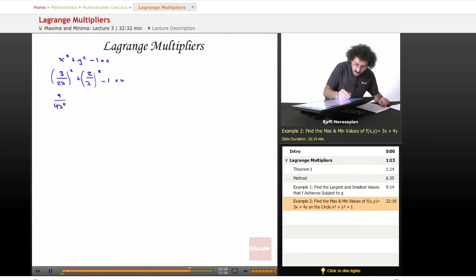Let's work all of this out. 9 over 4 lambda squared plus 4 over lambda squared minus 1 equals 0. I'm going to multiply through by 4 lambda squared. When I multiply by 4 lambda squared, I'm going to get 9 over here, I'm going to get 16 over here minus 4 lambda squared equals 0. Just to get rid of the denominator. Now, 9 plus 16 is 25. That equals 4 lambda squared.